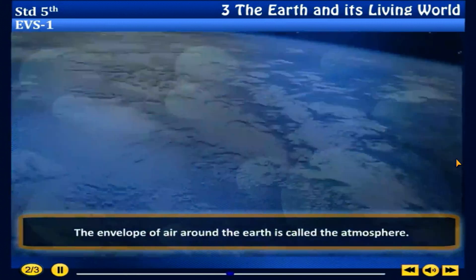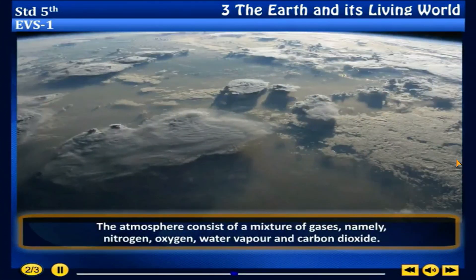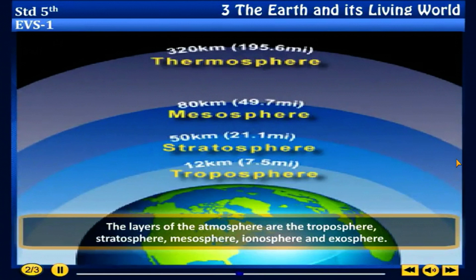The atmosphere: the envelope of air around the earth is called the atmosphere. The atmosphere consists of a mixture of gases, namely nitrogen, oxygen, water vapor and carbon dioxide. The layers of the atmosphere are the troposphere, stratosphere, mesosphere, ionosphere and exosphere.